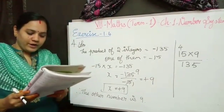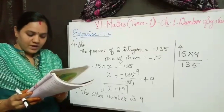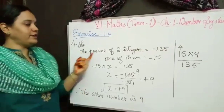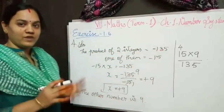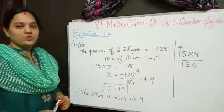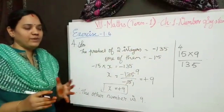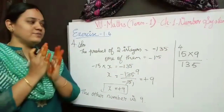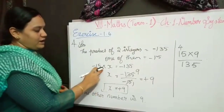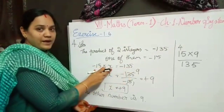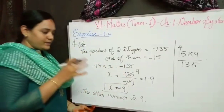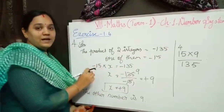The fourth problem: the product of 2 integers is minus 135. If one number is minus 15, find the other number. So the equation is minus 15 times x equals minus 135. Product means multiplication, and we need to find the value of x.